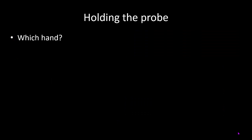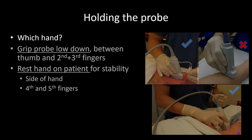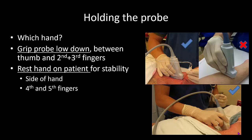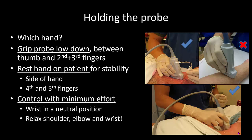The way you hold the probe is also important. You should use whichever hand feels most comfortable, recognizing that you will be using the other hand for needling. A common mistake is to hold the probe high up, when what you should be doing is to grip it low down and have part of your hand resting on the patient for maximum stability. With practice, you want to get to the point where you can control the probe with minimum effort. This means having the wrist in a neutral position and relaxing your shoulder, elbow, and wrist.